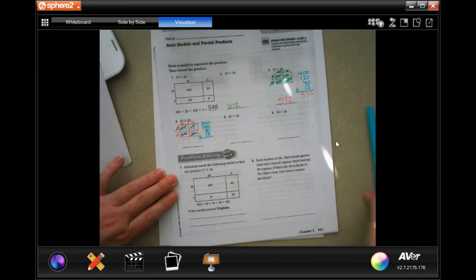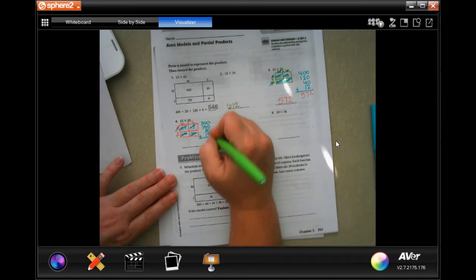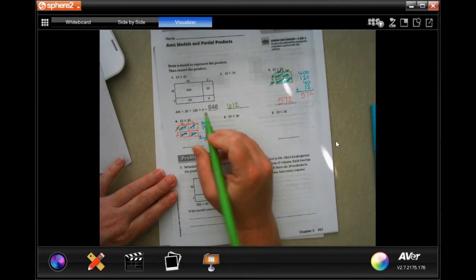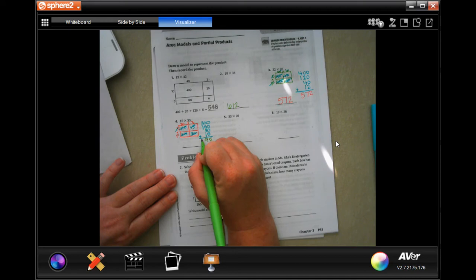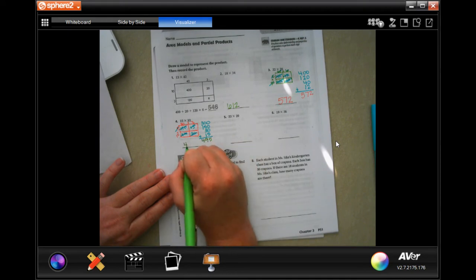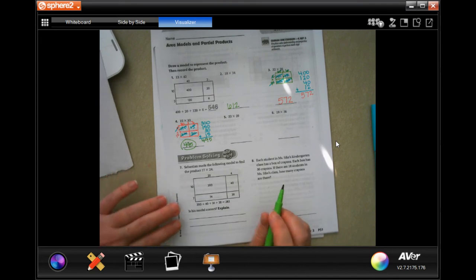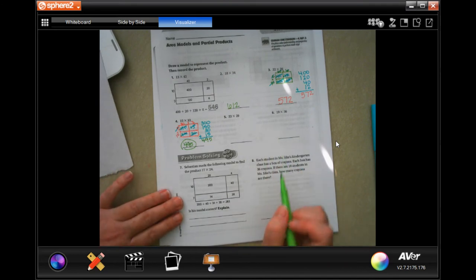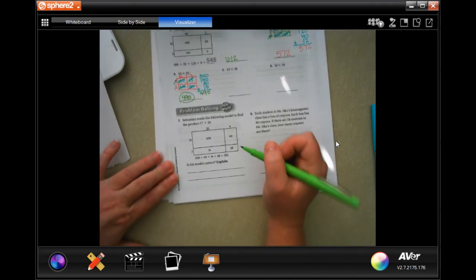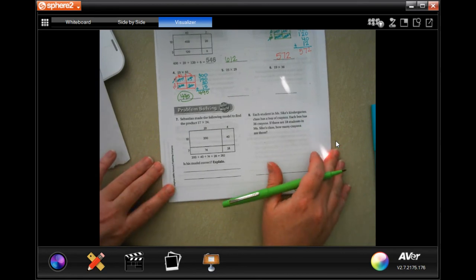And I'm going to add them up. All the way down 5. 5 plus 3 is 8. Plus one more is 9. And then 3 plus 1 is 4. 495. All right. You guys do 5 and 6. We're going to come down to 7.